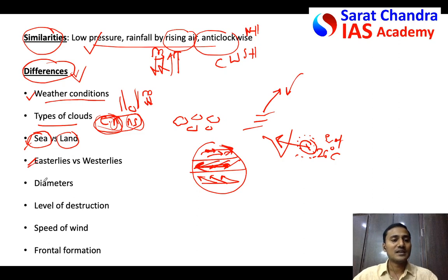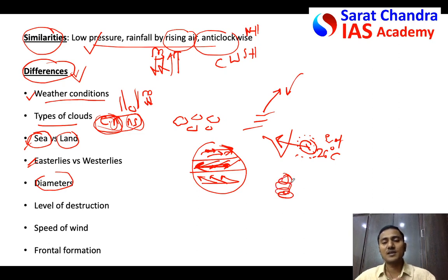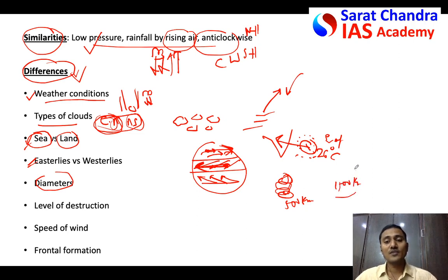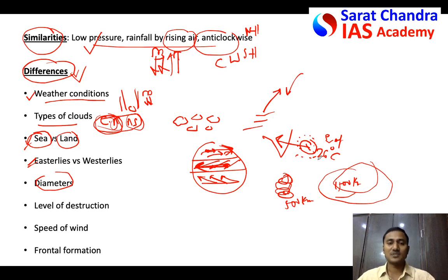Fifth difference: diameter. Tropical cyclones have a diameter of around 500 km maximum (sometimes up to 1000 km). Temperate cyclones can be 1500 km and sometimes even up to 2000 km — significantly larger.